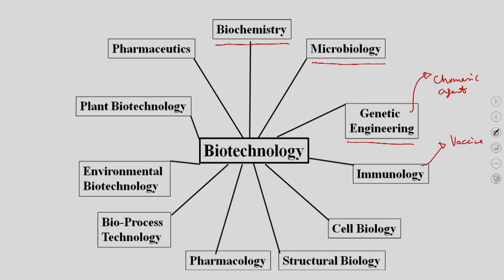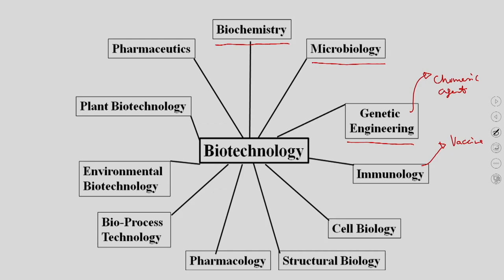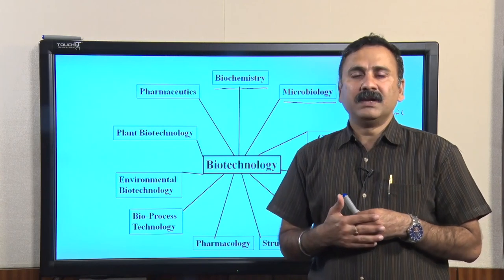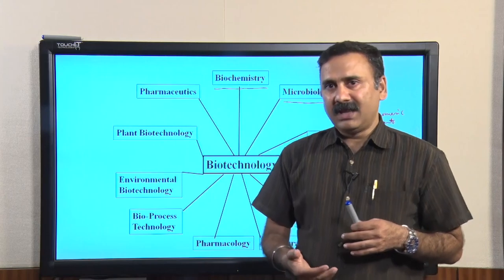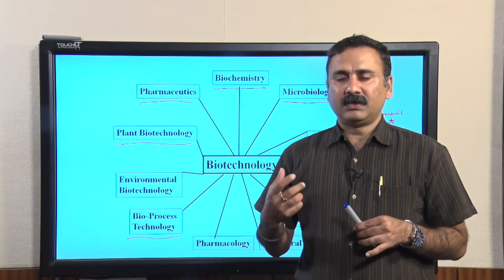You also need inputs from environmental biotechnology, which are important to ensure that biotechnology-related processes do not affect the local or global environment in a way that makes it unsuitable for human beings and other animals. You also need inputs from plant biotechnology and pharmaceutics to develop new drugs, and from bioprocess technology to upregulate or downregulate a process without compromising product quality while increasing yield and productivity.